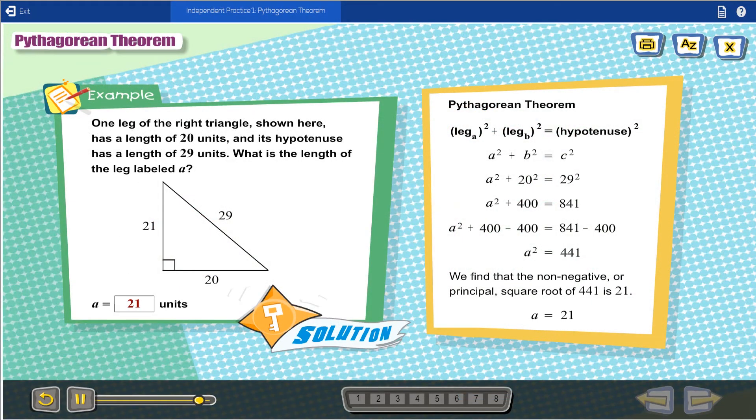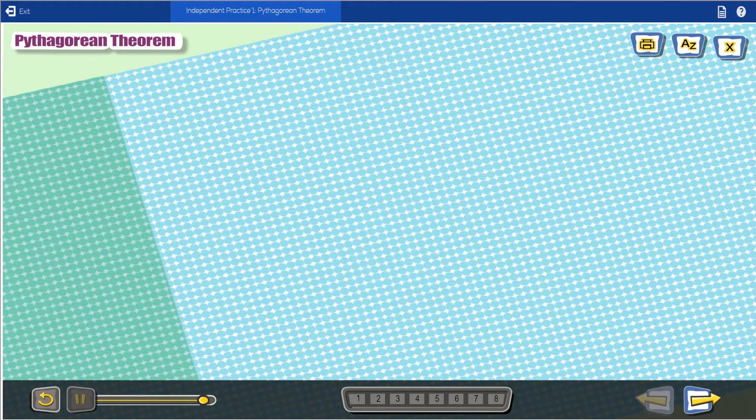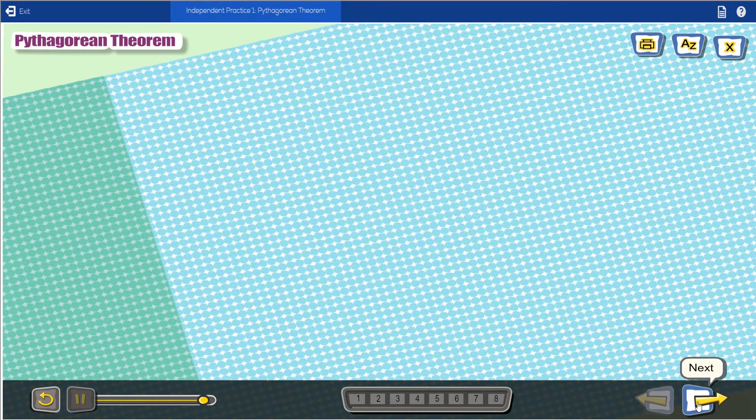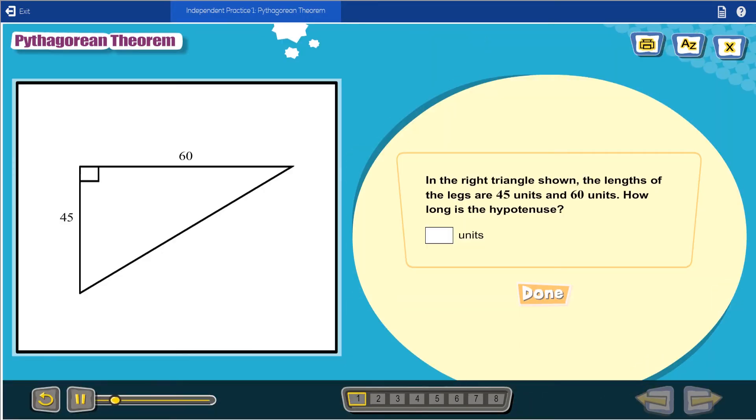As extra practice, there is an optional independent practice activity that reinforces what students are learning, making sure they understand before moving on to the activity quiz. And now it's time to try some problems. In the right triangle shown, the lengths of the legs are 45 units and 60 units. How long is the hypotenuse?